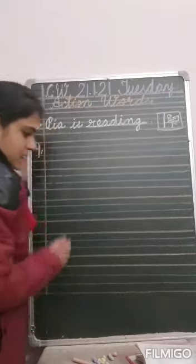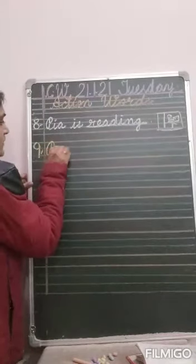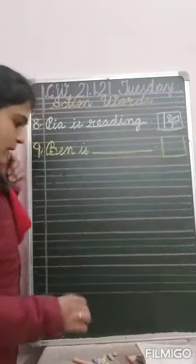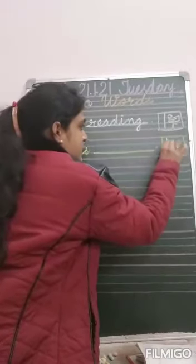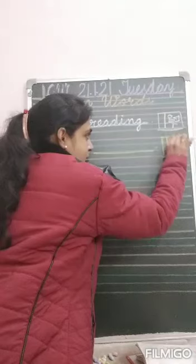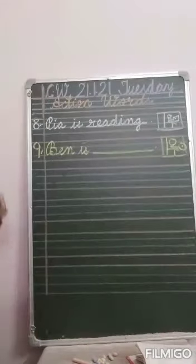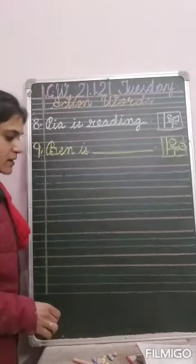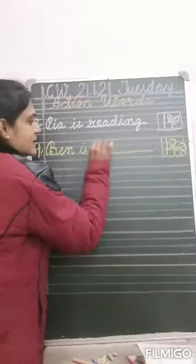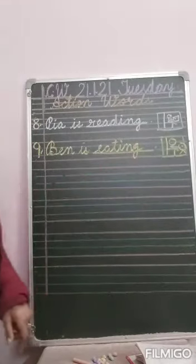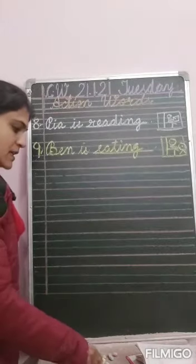Now number nine. Ben is dash. See — Ben is sitting on the chair and he is holding a plate. So what is he doing? If he has a plate in his hand, he is eating. Write down eating. E-A-T-I-N-G. Ben is eating.